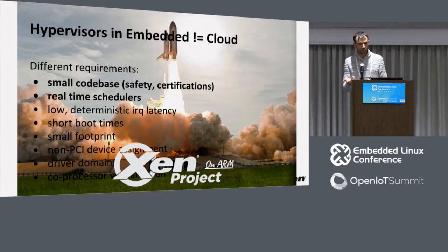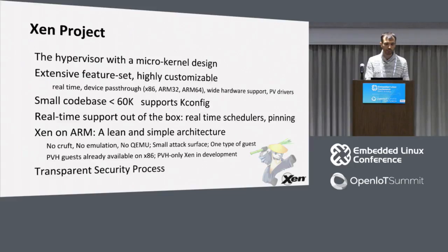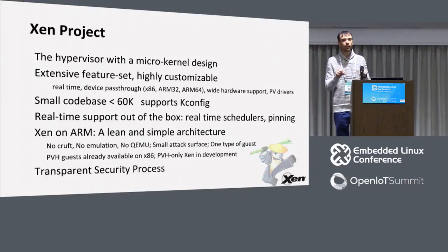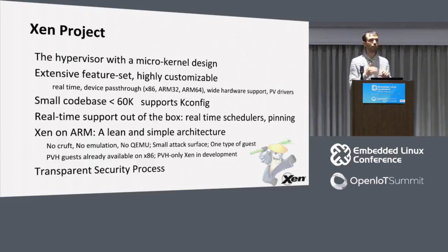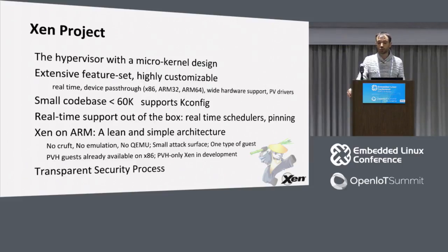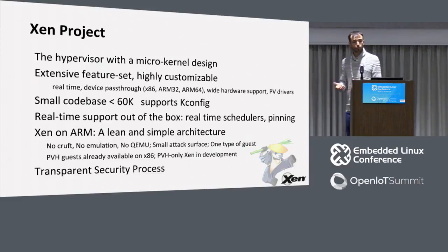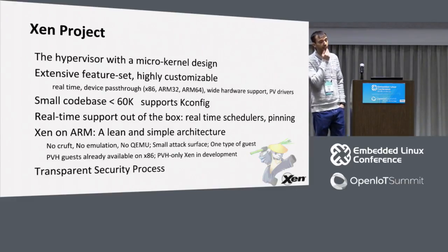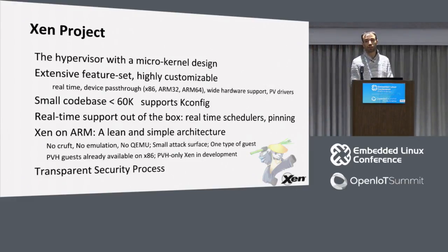I'm going to talk about Xen on ARM because it meets all these requirements — Xen on x86 as well, but on ARM it's more relevant for embedded. Xen is a hypervisor with a microkernel design: Xen runs at the highest privilege execution level and a lot of things can be deprivileged and run inside VMs. It comes with an extensive feature set including real-time support out of the box, device assignment on x86, ARM 32 and 64, a wide range of supported hardware, and a lot of PV drivers to share devices such as network, block, console, and graphics. Xen supports Kconfig, so it works similarly to the Linux kernel — you can cut the code base quite significantly, getting below 60,000 lines of code for Xen on ARM easily.